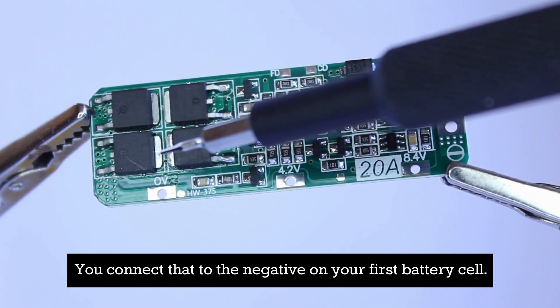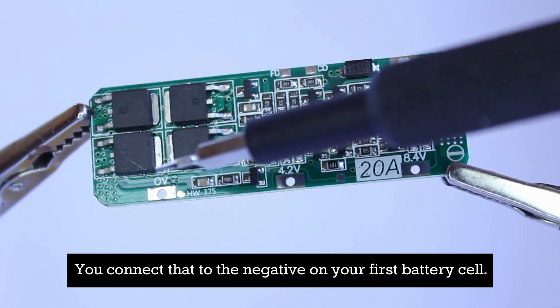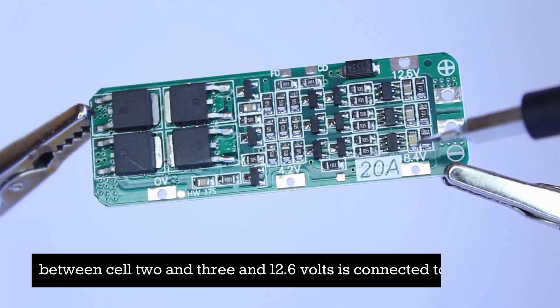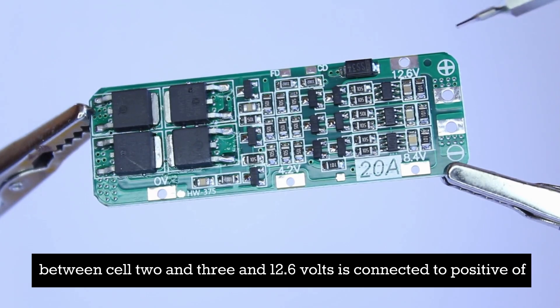For 0 volts, you connect that to the negative on your first battery cell. The 4.2 volt connection is between cell one and two. 8.4 volts is between cell two and three. And 12.6 volts is connected to the positive of your third cell.